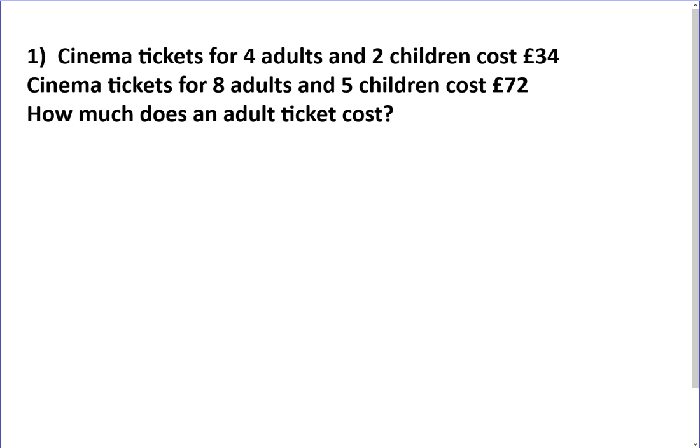Cinema tickets for four adults and two children cost £34. Cinema tickets for eight adults and five children cost £72. How much does an adult ticket cost? Let A be equal to the cost of an adult ticket and let C be the cost of a child ticket. So 4A plus 2C equals 34, and 8A plus 5C equals 72.